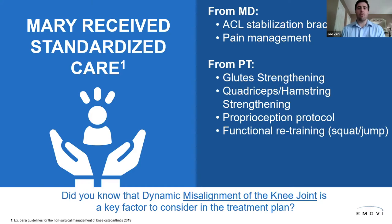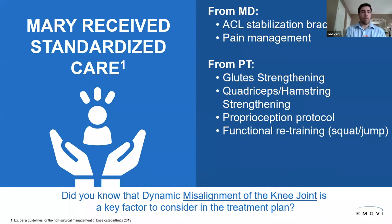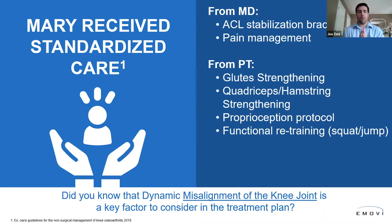From the physio perspective she's done glute strengthening, quadriceps and hamstring strengthening, proprioceptive exercises, and functional retraining including squatting and jumping to get back to higher levels of function. Despite all this care, she still has continued pain in the knee after surgery. The question we ask ourselves is: if I know something about the dynamic alignment of the knee and its kinematics, will that inform my treatment plan so I can address the underlying root causes of this residual knee pain?